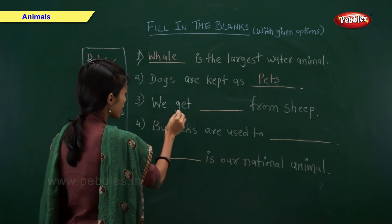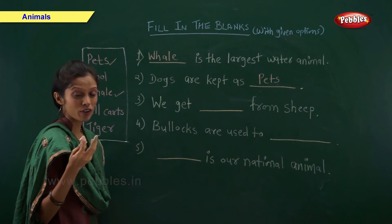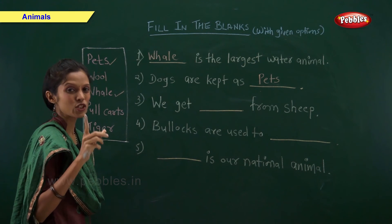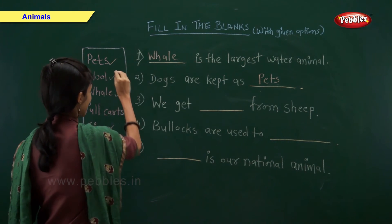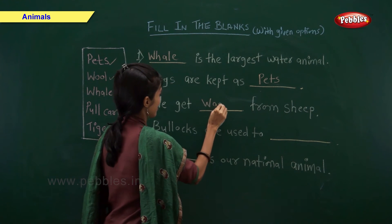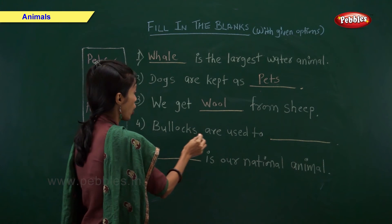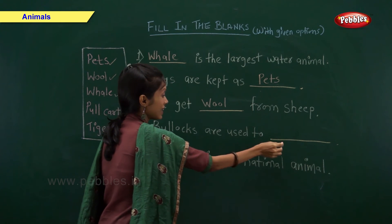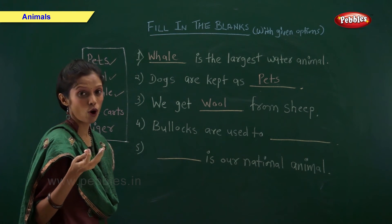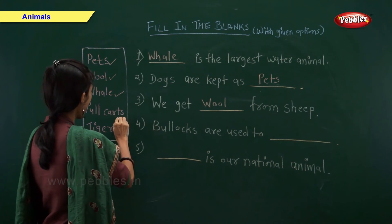We get Dash from sheep — what do we get from sheep? Right, wool. Bullocks are used to Dash — bullocks are used to do what? Yes, pull carts.